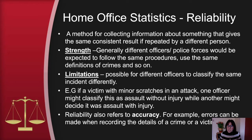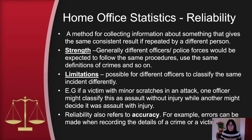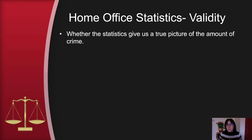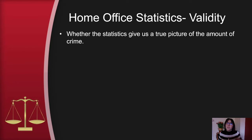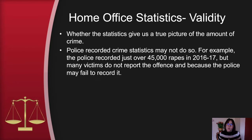Reliability also refers to accuracy — for example, errors can be made when recording the details of a crime or a victim. As for validity, this means whether the statistics give us a true picture of the amount of crime — do they give a valid representation of crime?